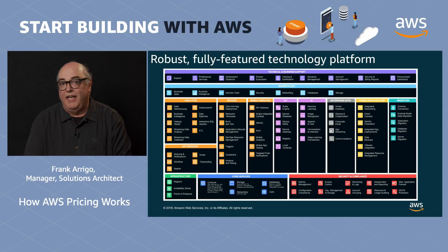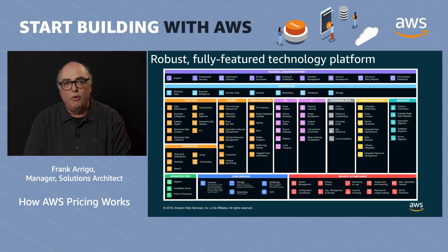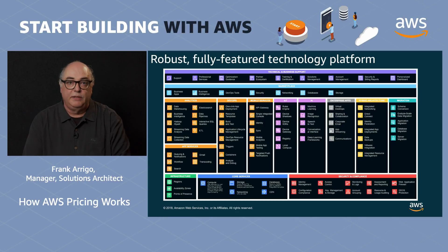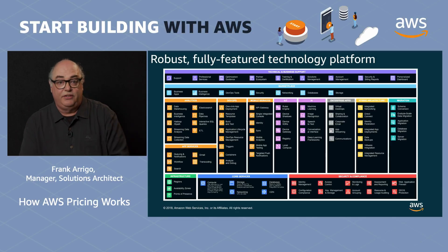This is a visualisation of the AWS services and solutions we offer today. We have over 100 services, which include our core services like compute, storage and database, and more advanced services like AI, machine learning and IoT, which are all accessible with a click of a button through our self-service platform. Our session today will be on how pricing works in AWS, which actually touches on all of these services.